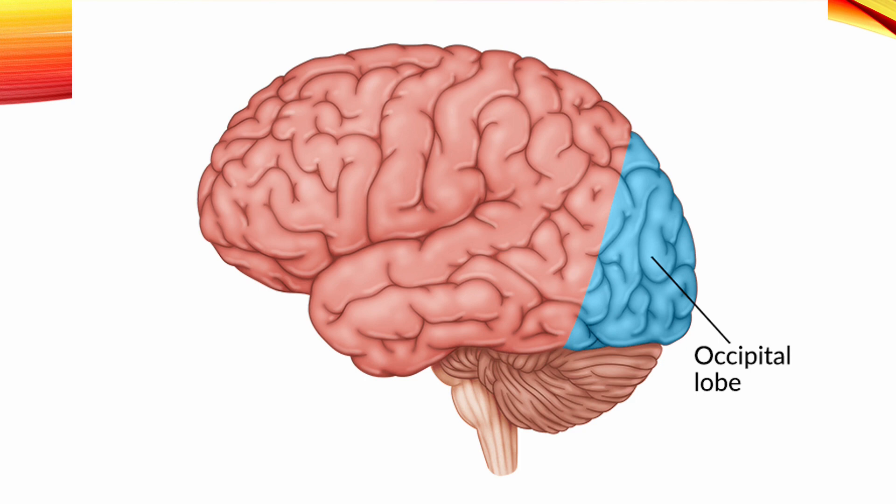Occipital lobe. This lobe extends from the parieto-occipital sulcus to the occipital pole. There are no individual gyri on the lateral surface of the occipital lobe.